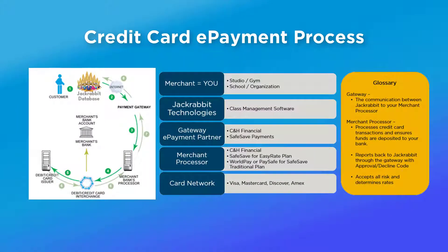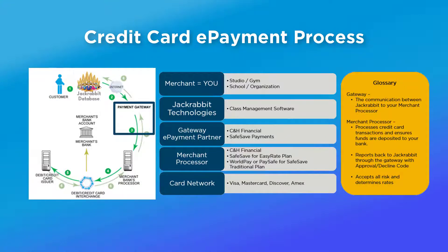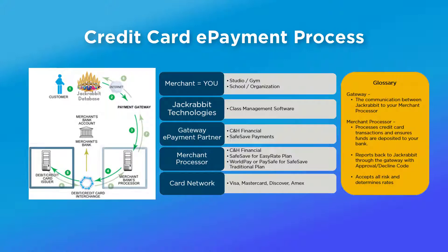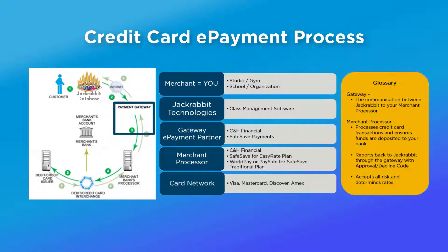When you use one of our payment partners and initiate an ePayment transaction in JackRabbit, JackRabbit securely transmits it to your payment partner, also known as a gateway. The gateway converts it and sends it to the merchant processor, who then responds back to the gateway if it's accepted or declined. The entire process typically takes seconds.